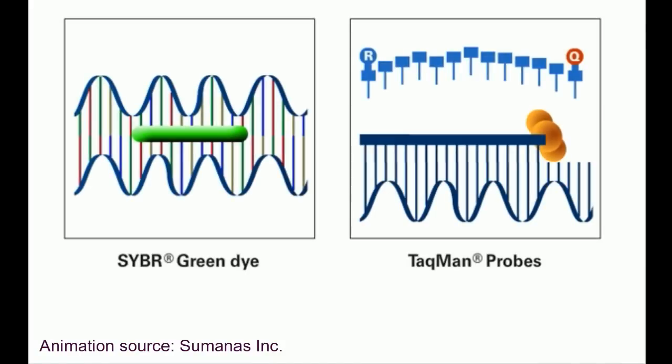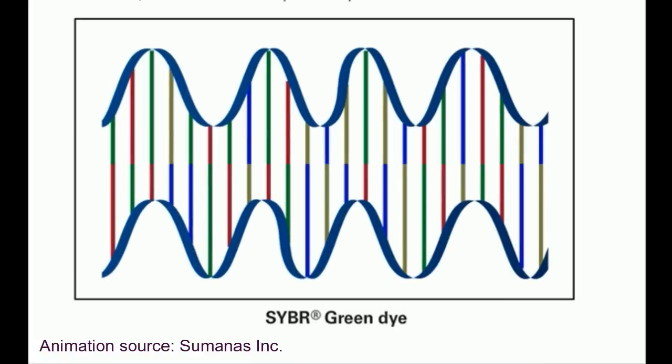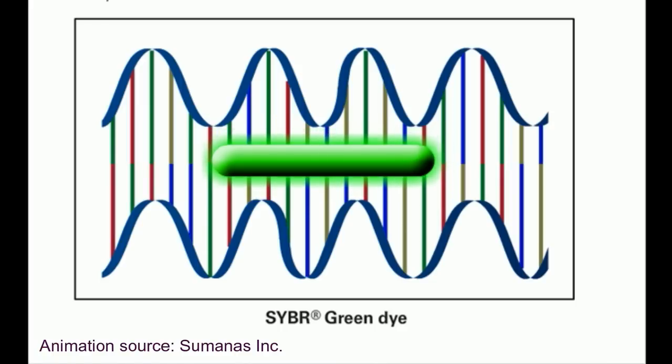Real-time PCR systems from Applied Biosystems use two main fluorescence detection methods. SYBR Green is the first one. The SYBR Green fluorescence format uses a dye called SYBR Green, which binds non-specifically to double-stranded DNA. The DNA-dye complex emits green light, which is recorded by the real-time PCR instrument.